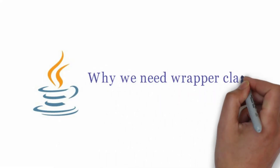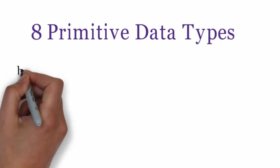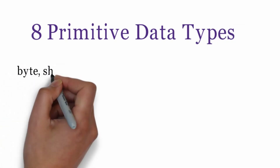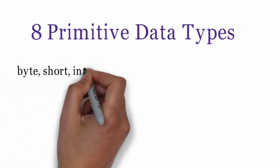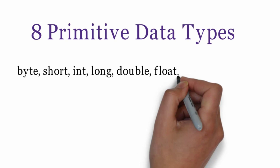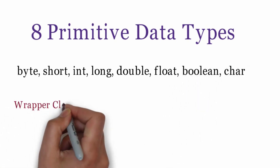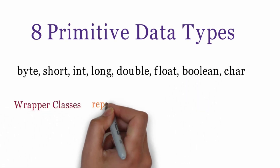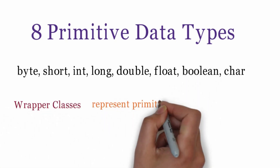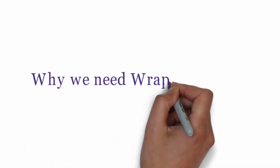Why we need wrapper classes in Java? We have 8 primitive data types in Java. For example, Byte, Short, Int, Long, Double, Float, Boolean, Char. Wrapper classes in Java are used to represent primitive data types as an object. Now we will see reasons why we need wrapper classes.